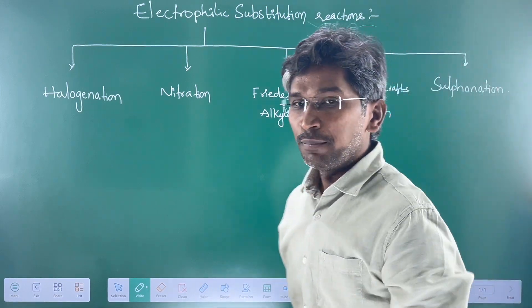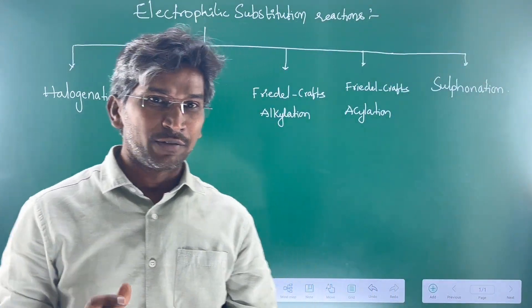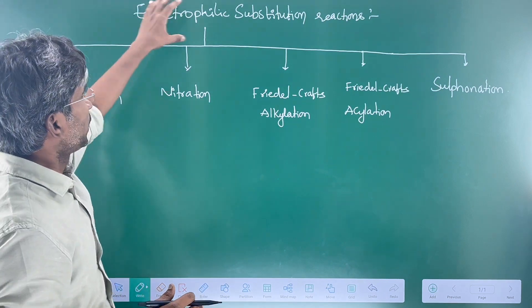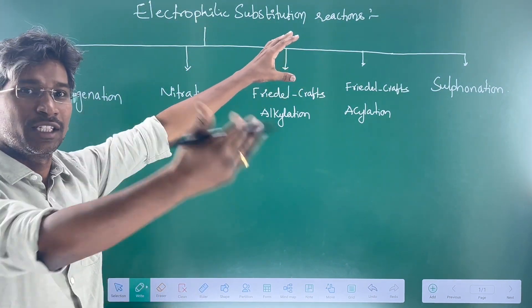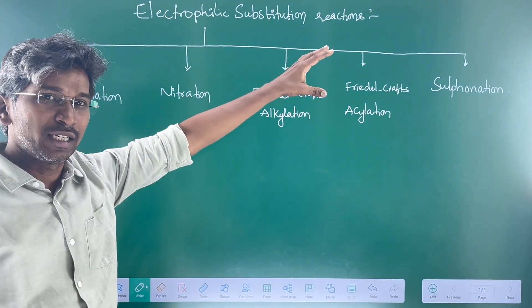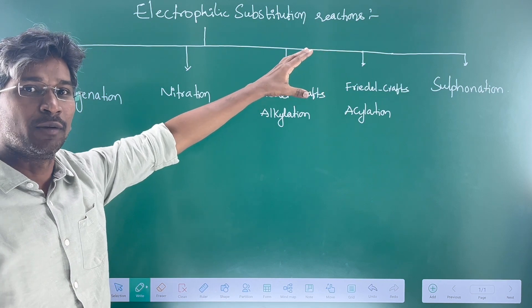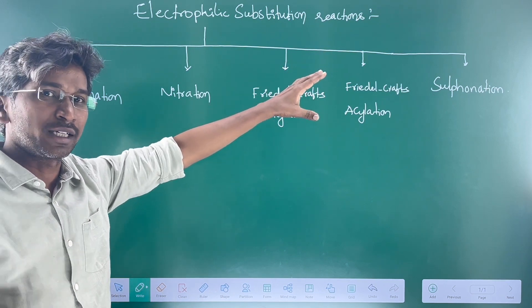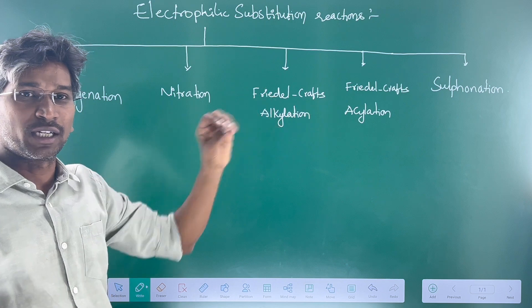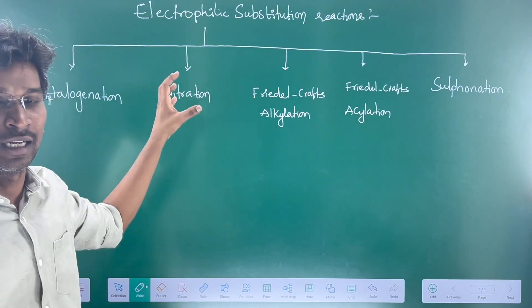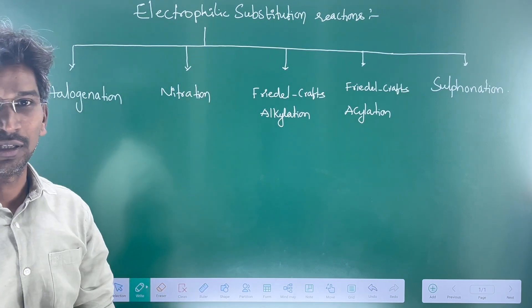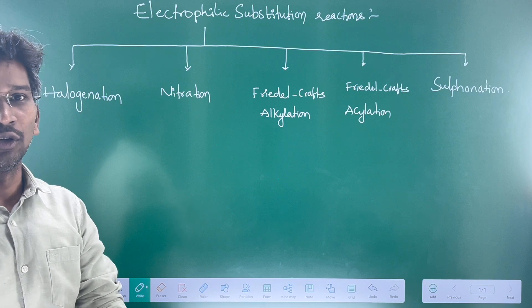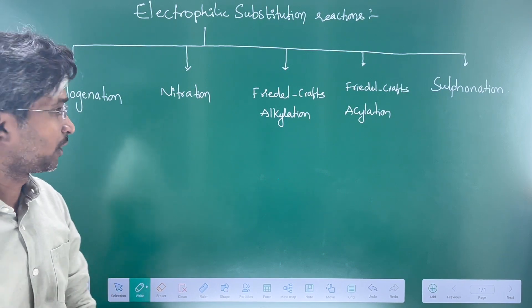This is one of the important topics in the benzene chapter. If you learn electrophilic substitution reactions, reactions in each and every chapter will become easy — not just five, but many reactions. Named reactions also depend on electrophilic substitution, for example the Reimer-Tiemann reaction and the Kolbe-Schmidt reaction.